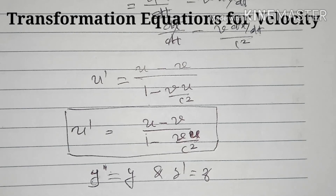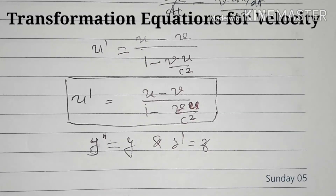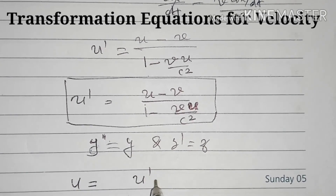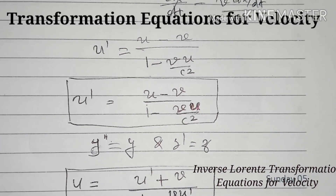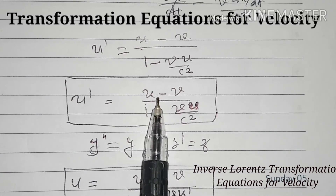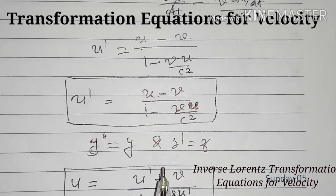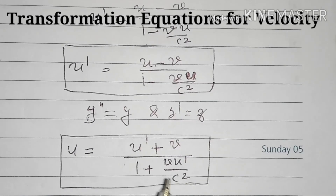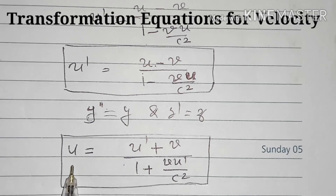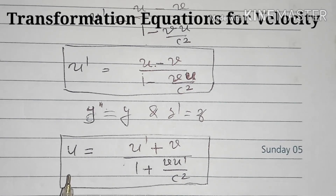We can also write the inverse Lorentz Transformation Equation for velocity in the S frame. From the previous equation, we get U is equal to U dash plus V, divided by 1 plus V U dash divided by C squared. We simply replace the minus signs with plus signs and swap primed and unprimed coordinates to obtain the inverse Lorentz Transformation Equation for velocity in the X direction in the S frame.